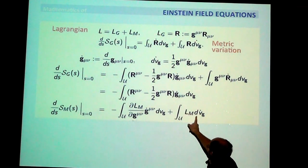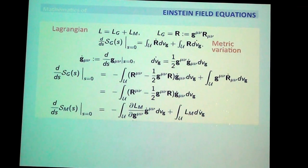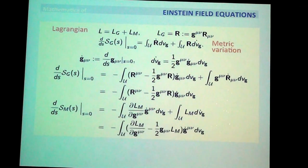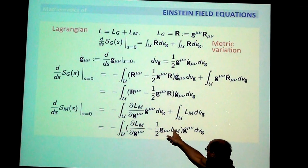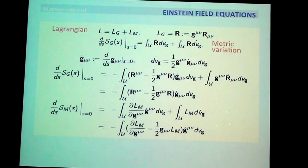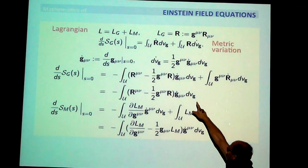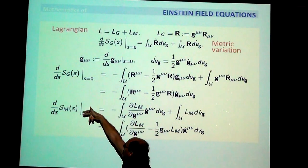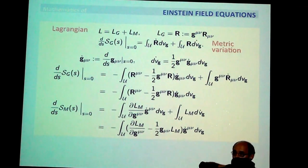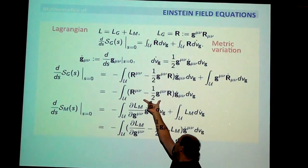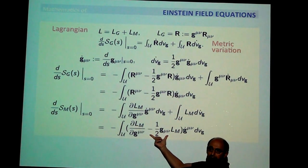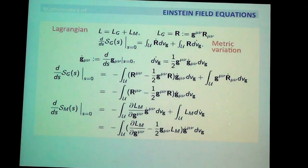Just like before, you get two types of terms and gather them in this form. You get the derivative of L with respect to the inverse metric, minus one-half g-mu-nu times the Lagrangian. Again you have the same kind of g-dot mu-nu, so the sum of these two things evaluated at sigma equals zero must be zero for all variations g-dot mu-nu.